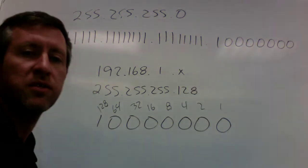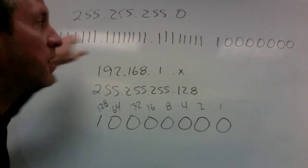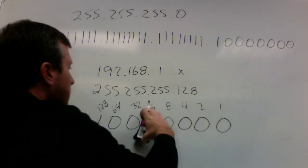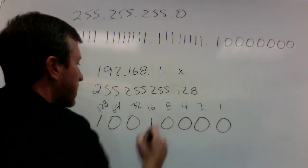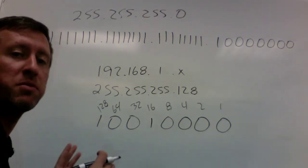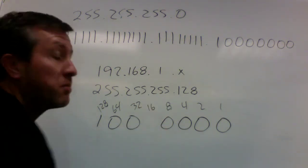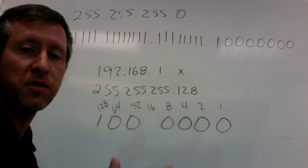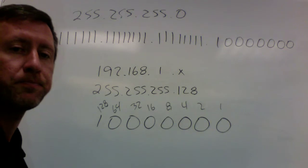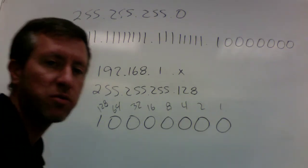Now the thing with these bits with subnet masks is that my ones are always going to start from the left, my zeros are always going to start from the right, and they're going to meet somewhere in the middle. So I can't have something like 1, 0, 0, 1, 0, 0, 0, 0. Not for a subnet mask. I can have that for an IP address, but my subnet masks, the ones always start from the left, the zeros always start from the right. So this is a valid subnet mask.